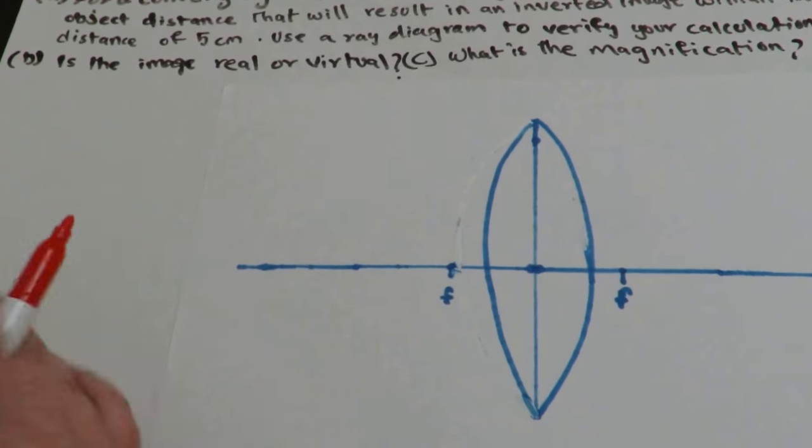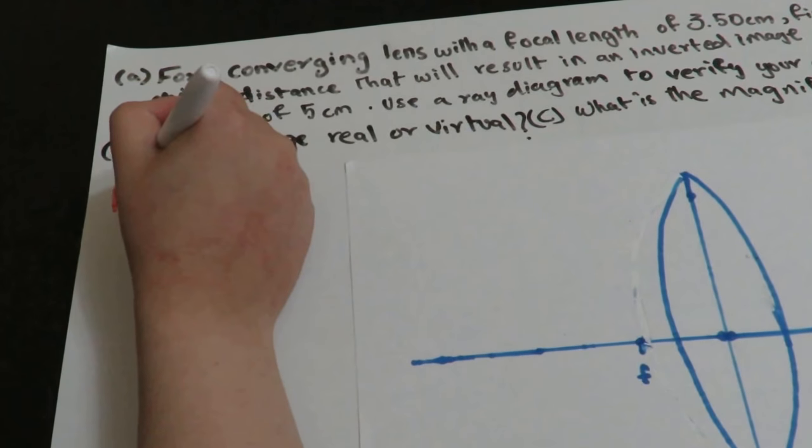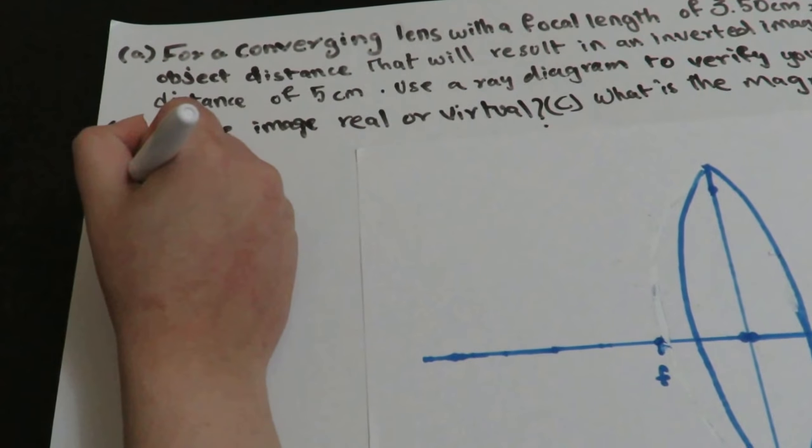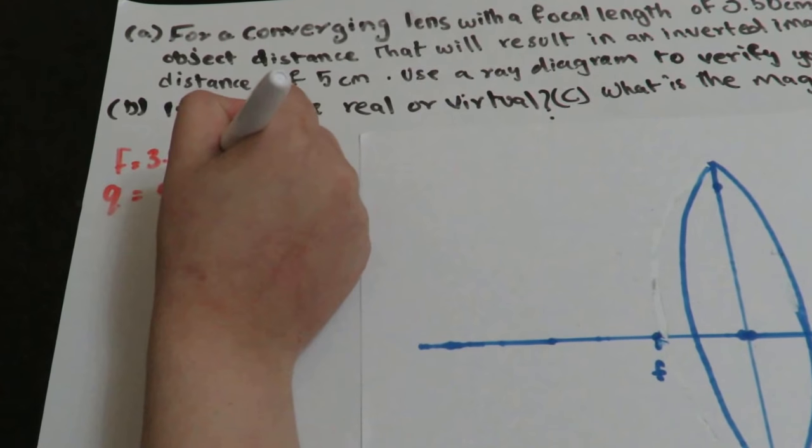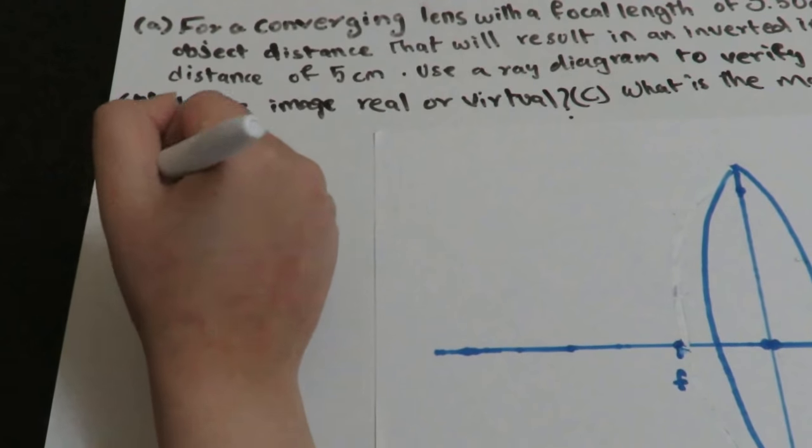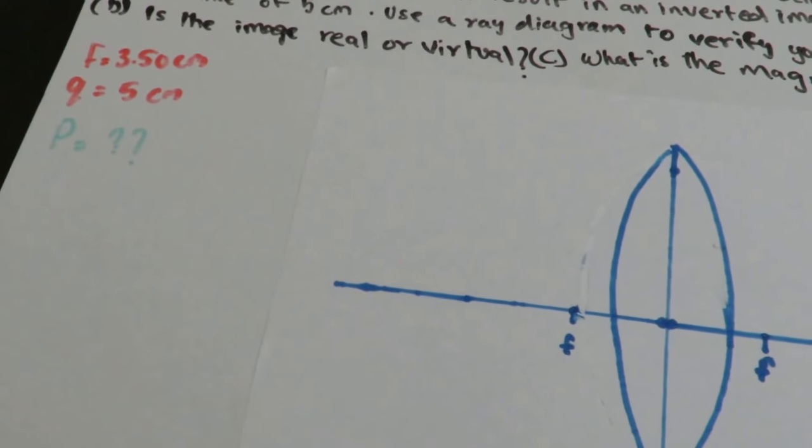So the givens are, focal length which is 3.5 cm, Q is 5 cm, and the unknown is P, which is the object distance.